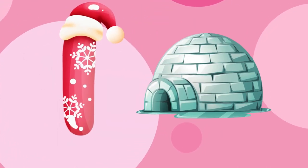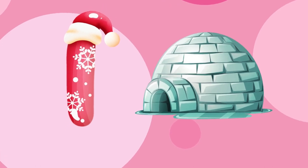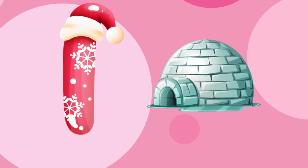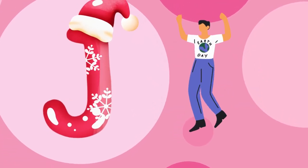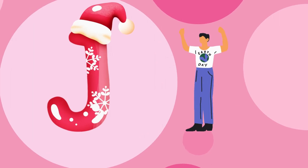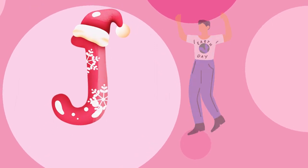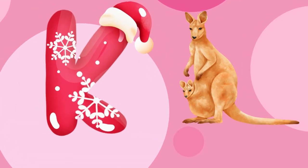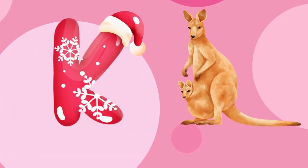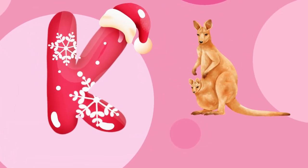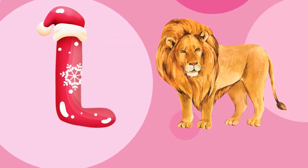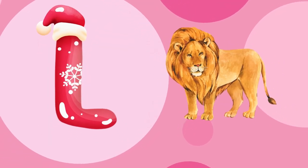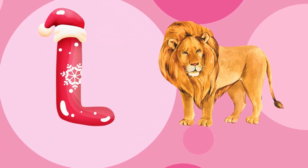I is for igloo, i-i-igloo. J is for jump, j-j-jump. K is for kangaroo, k-k-kangaroo. L is for lion, l-l-lion.